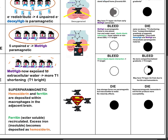Next, ferritin and hemosiderin are superparamagnetic. These iron storage forms are paramagnetic but inaccessible to water, so they have no relaxivity effects and no dipole-dipole interaction — it becomes T1 dark. These iron storage forms also create local distortion of the signal. Hence, it becomes T2 dark.